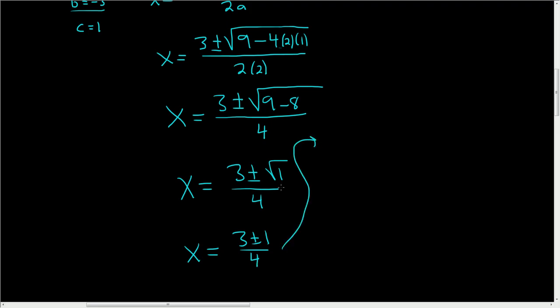Now in this case, we do have to keep going because we can, right? If we had gotten something like 3 plus or minus the square root of 17 over 8, we would have been done. But we didn't. We got 1, so we can actually add these numbers.